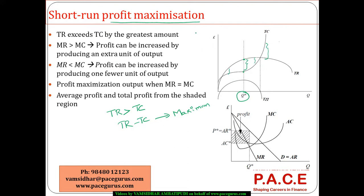At that quantity, marginal revenue equals marginal cost. The logic is: if MR is greater than MC, one additional unit gives more revenue than cost, so profit is increasing — produce more. If MR is less than MC, reducing one unit increases profit. So the profit-maximizing output is where MR equals MC.